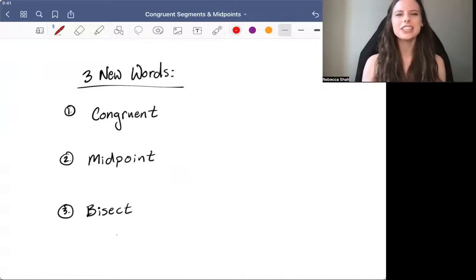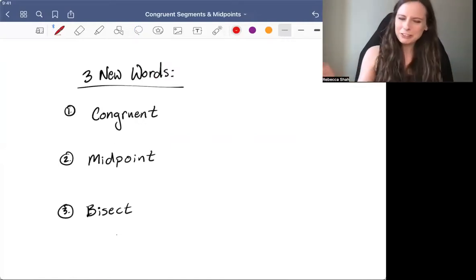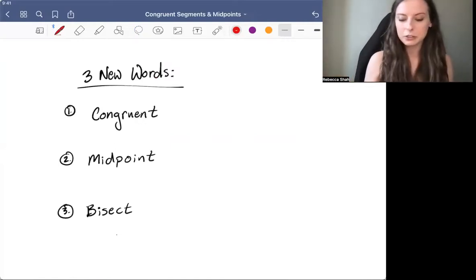Hey guys, today we'll learn three new vocab words: congruent, midpoint, and bisect. These three words are all related. So let's start with congruent.